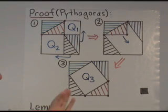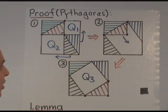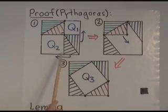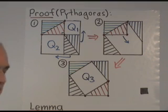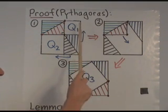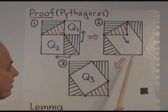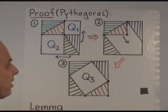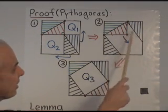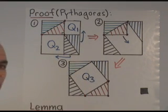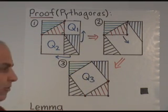So the idea is we're going to shuffle things around in this picture just by translating, but that'll preserve areas. So what we're first going to do is we're going to slide that black triangle over to the left, and we're going to slide the blue triangle up. So the black triangle comes over here, and the blue triangle comes over there. And now the white area here is still the same as the white area was over there, namely Q1 plus Q2.